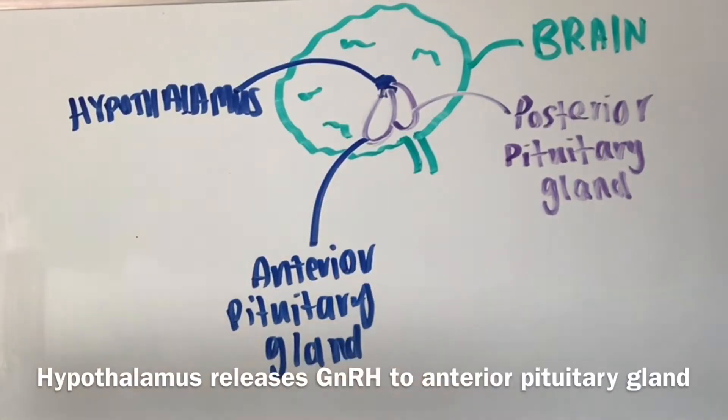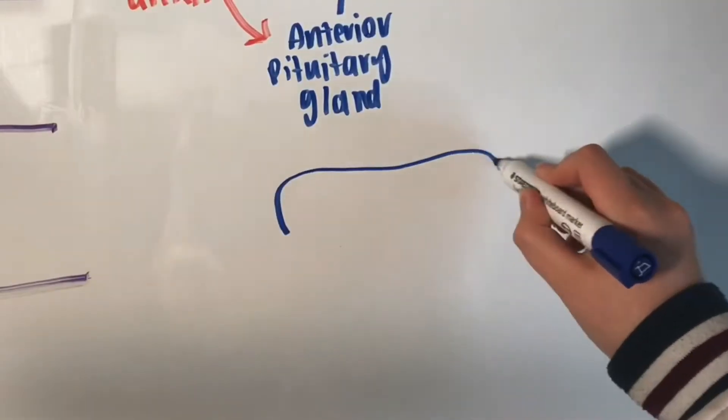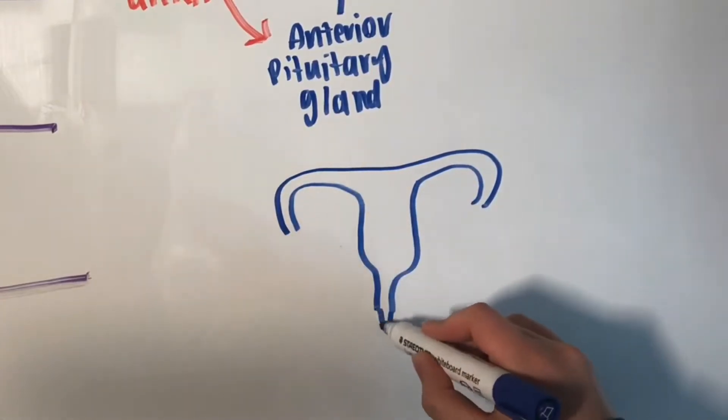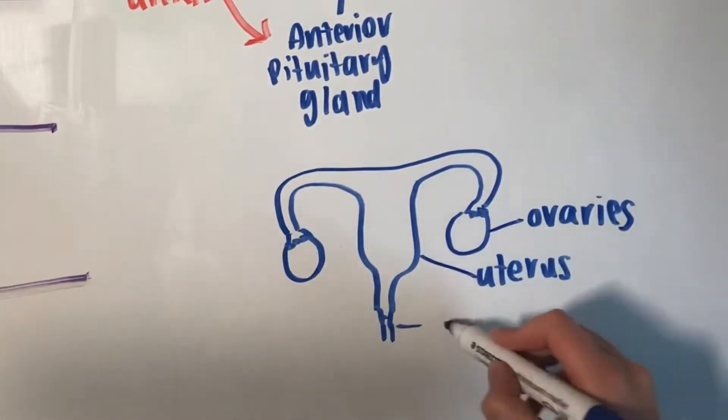Gonadotropin-releasing hormone causes the pituitary gland in the brain to make and secrete two hormones called follicle stimulating hormone, FSH, and luteinizing hormone, LH.